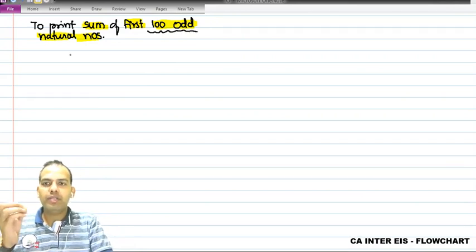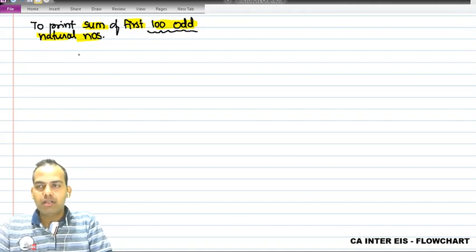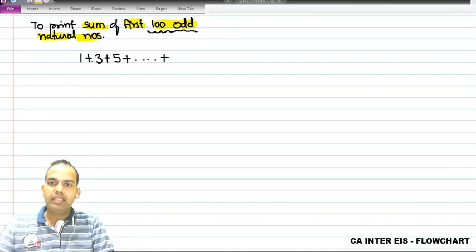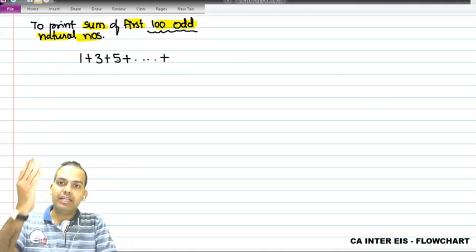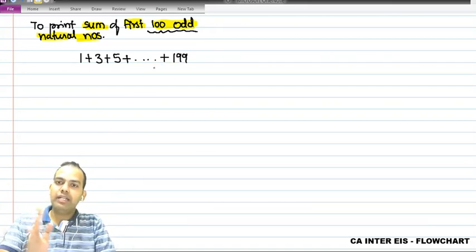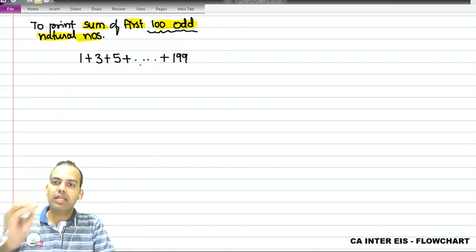Now what do you mean by odd? Odd 100 natural numbers - 1 plus 3 plus 5, these are the odd ones. It will be taken, this type of 100. 100 means you have to go till 199. You understand this? You have to go till 199, then only you will get first 100 odd natural numbers.